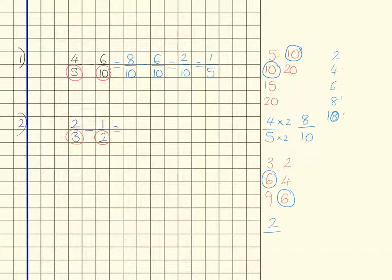So 2 thirds, we want to turn it into a 6, so we times it by 2, and up here we have to do the same, so we end up with 4 sixths, so I'm going to write that down now, 4 over 6.